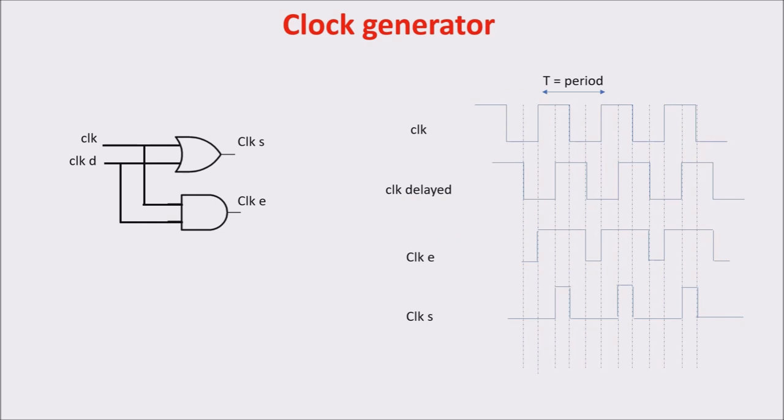Second, passing clock and clock delayed in an AND gate and in an OR gate, we can get clock enabled and clock set. You can see clock enabled stays at 1 longer than clock set, which goes to 0 when enable is still at 1.